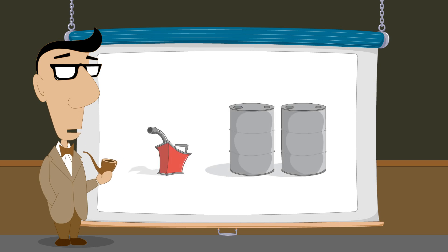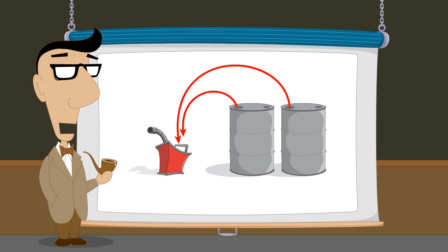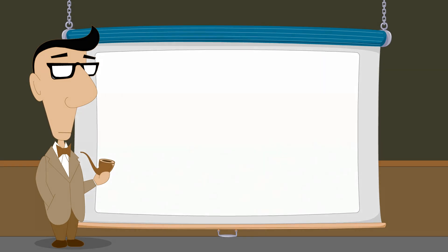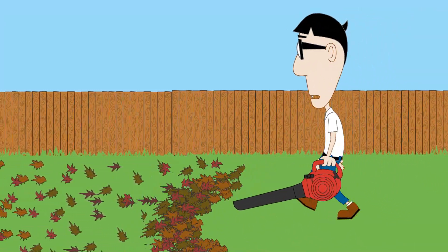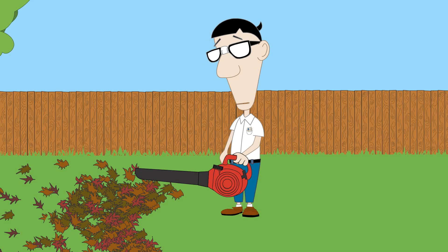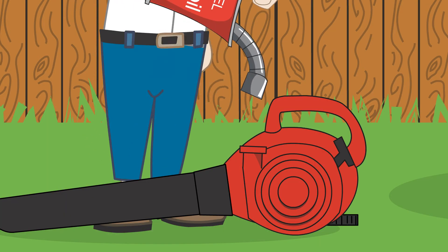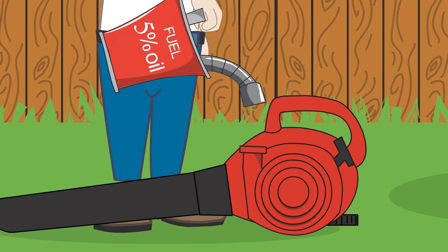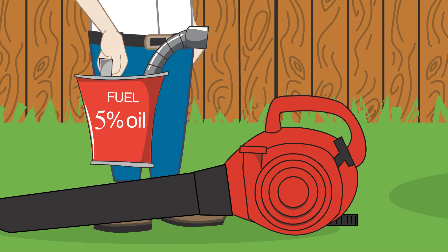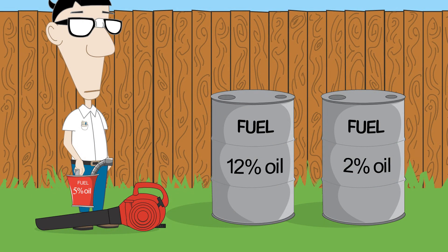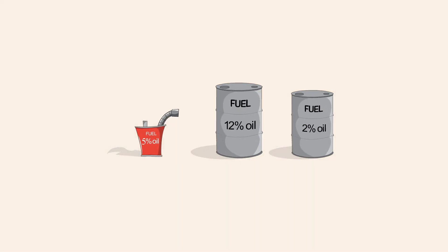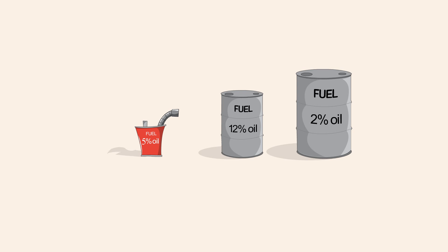In our next example, we will see how using algebra it is possible to produce a mixture of a desired concentration by combining calculated quantities of two mixtures with different concentrations. A.V. Geekman has borrowed a leaf blower to perform some yard work. The blower runs on fuel which is a mixture of gasoline and oil where five percent of the mixture is oil. Unfortunately, A.V.'s fuel can is empty and there are no other containers of gasoline or oil available. However, there are two fuel barrels nearby which contain mixtures of gasoline and oil. The fuel in one barrel contains twelve percent oil and the fuel in the other contains two percent oil.